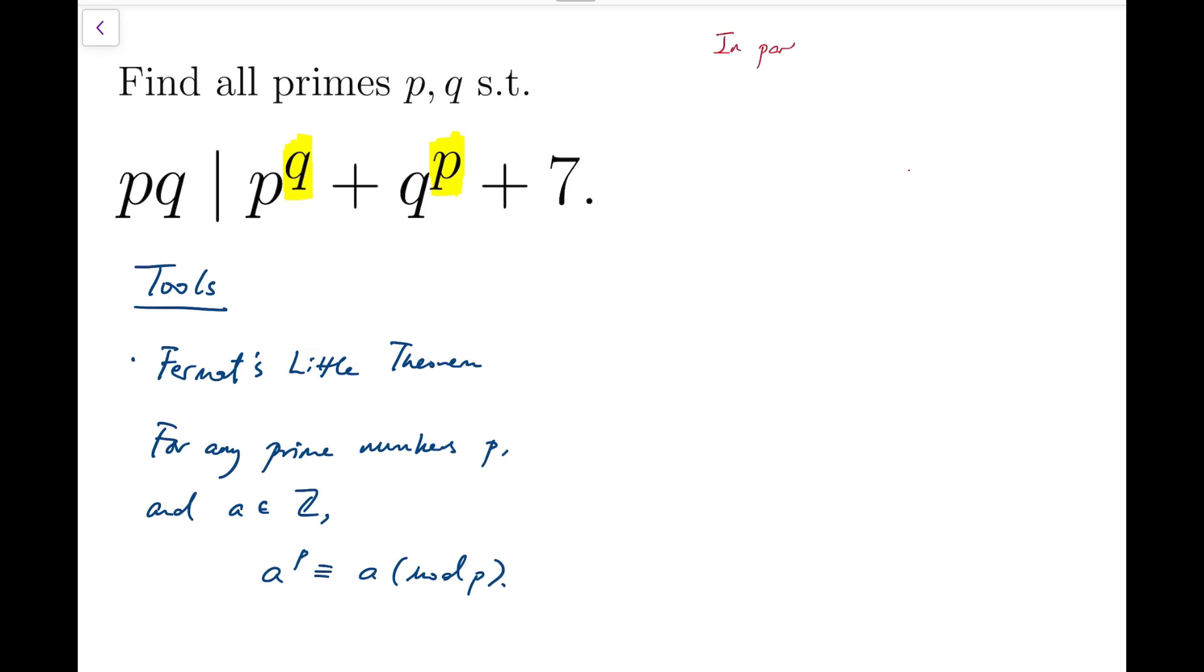p divides the whole expression, and same for q. But let's deal with the case when we only consider p as the divisor. So p to the q, this part, obviously is divisible by p. That means p divides q to the p plus 7.